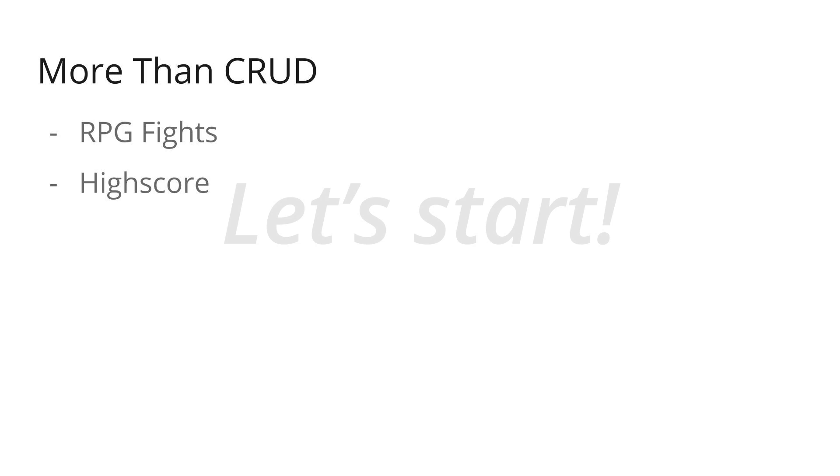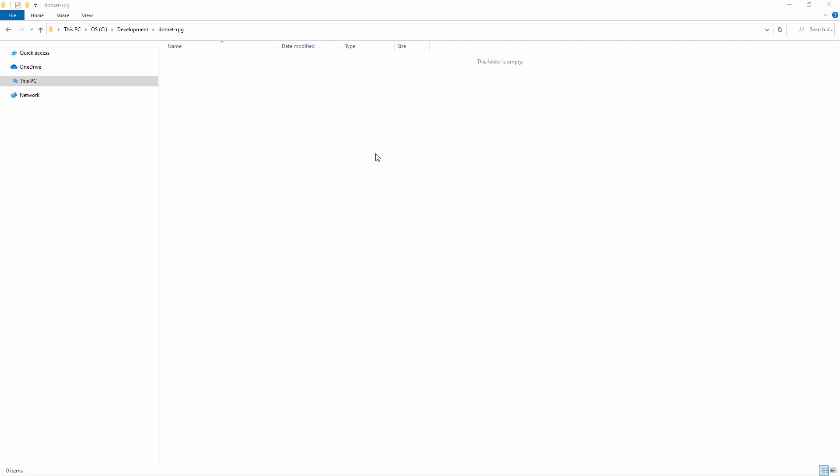As soon as the .NET SDK and Visual Studio Code are installed, we can already create our first .NET application, which will be a Web API. To start, I created a new folder called .NET RPG for .NET role-playing game. We can open this folder with VS Code — just right-click and select 'Open with Code'.